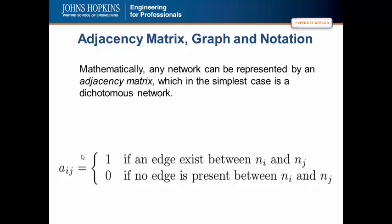Mathematically, any network, a social network, can be represented by an adjacency matrix. And the simplest case is what's called a dichotomous or binary network. The notation we have is a small letter, in this case A for adjacency matrix, represents an element of the matrix. The notation I, J are indices, meaning from node I to node J. And it is a 1 if there is an edge between node I and node J. It is a 0 if there is no edge between node I and node J.